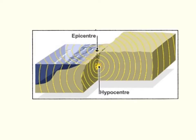An earthquake happens when a sudden release of energy causes the ground to shake and vibrate, associated with the passage of waves of energy released at the source. In this diagram, we can see the passage of the waves of energy.